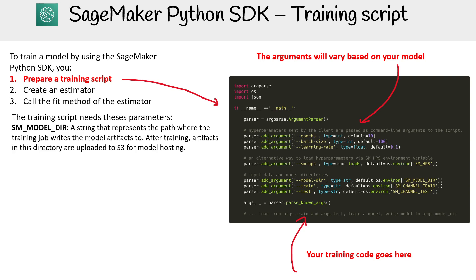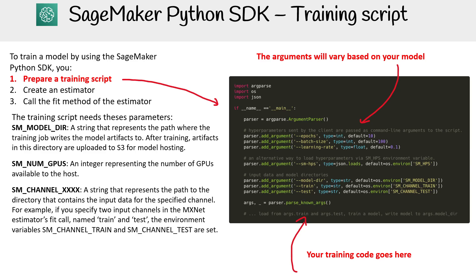The training script needs parameters. We have SM_MODEL_DIR, a string that represents the path where the training job writes the model artifacts to. After training, artifacts in this directory are uploaded to S3 for model hosting. We have SM_NUM_GPUS, an integer representing the number of GPUs available to the host. We have SM_CHANNEL, a string representing the path of the directory containing the input data for a specified channel — for example, if you specify two input channels in the MXNet estimator named train and test, the environment variables will be set. We have SM_HPS, a JSON dump of hyperparameters preserving JSON.